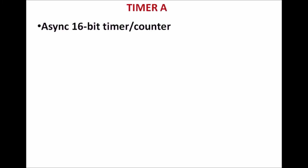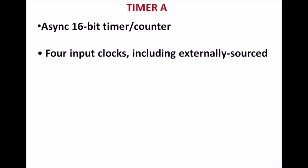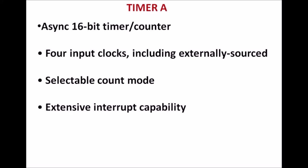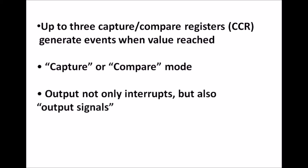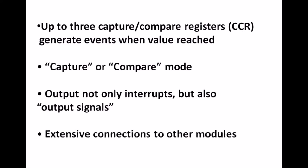Timer A is a synchronous 16-bit timer counter. The same timer block can be used as a counter also. There are four input clocks, which include externally sourced clock also. The selectable count mode means the user can select the modes of this count of timer. Interrupt capability is also available. There are three capture-compare registers (CCR), which generate events when a particular value is reached. Capture and compare modes are also available. Not only interrupts, but an output signal is also available. Extensive connection to other modules is also possible in this timer.